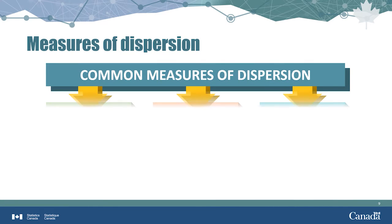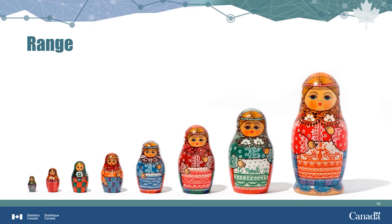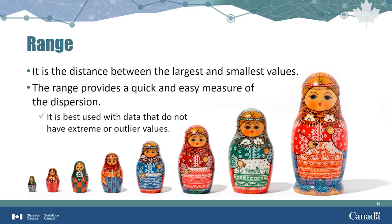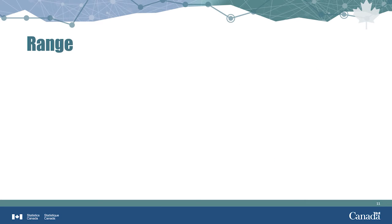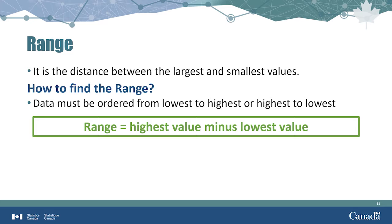Now back to our measures of dispersion. Three commonly used measures are the range, the interquartile range, and the standard deviation. The range is the difference between the largest and the smallest values in a dataset, and provides a quick and easy measure of spread. The range is best used with data that do not have extreme values. Knowing the package will be delivered between 10am and noon lets us plan our day — a range of 8am to 8pm is far less useful. The range is simply the highest value minus the lowest value.